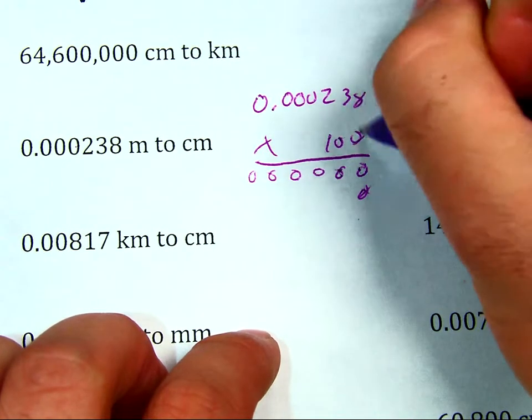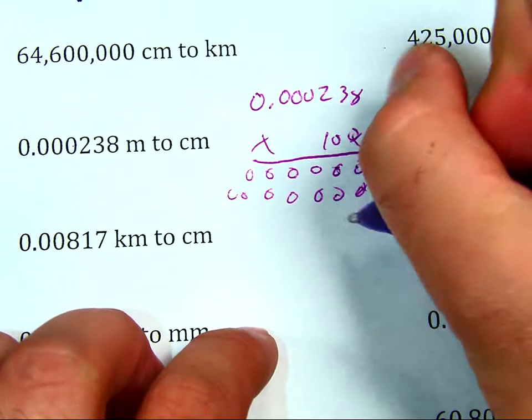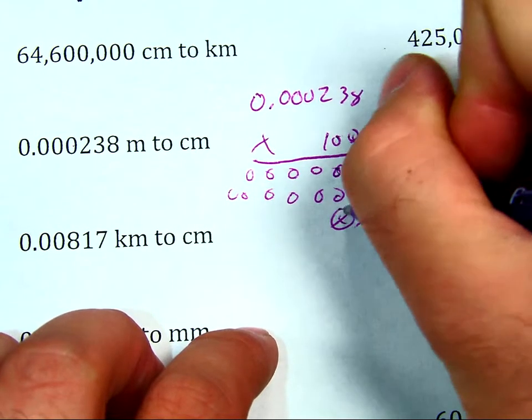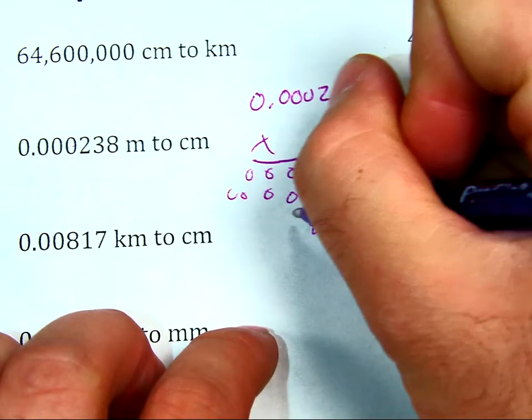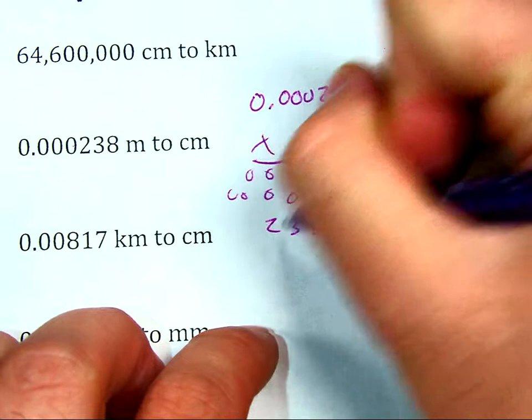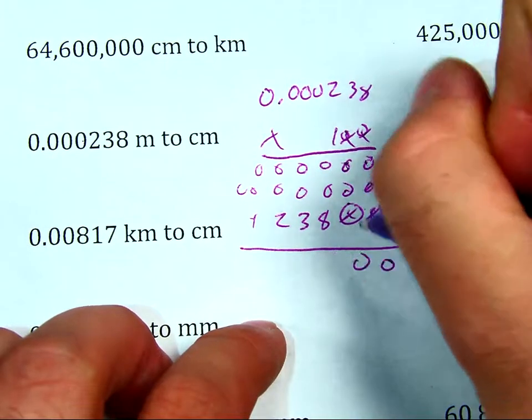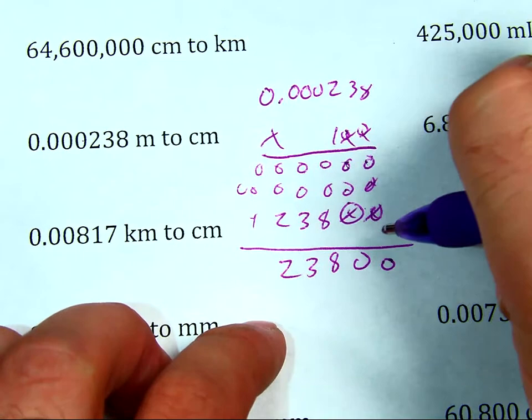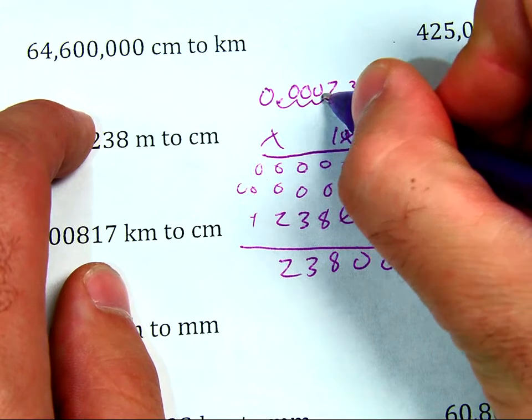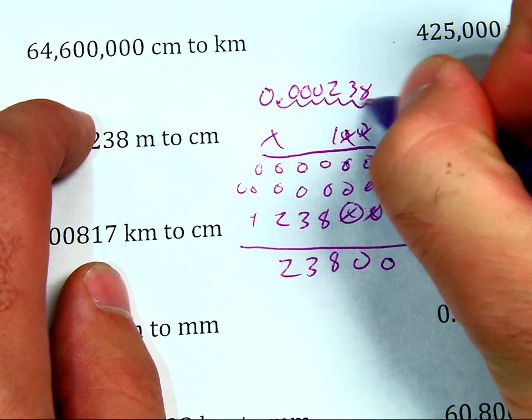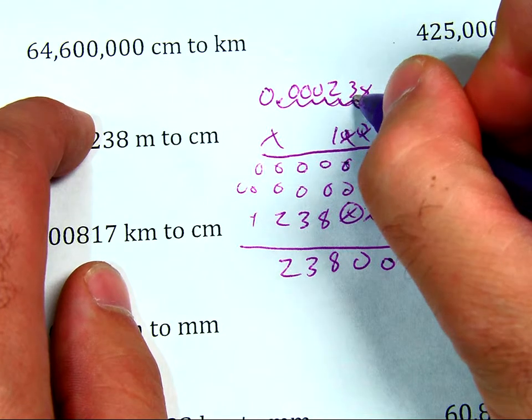So if I do 0.000238 times 100, I'll end up having a couple zeros. I'll have zeros across the board here. I'll have a placeholder. Zeros across the board here as well. Then 1, I'll have two placeholders. 1 times 8 is 8. 1 times 3 is 3. 1 times 2 is 2. The rest are going to be zeros. I can add them up. 0, 0, 8, 3, 2. Now, I have to count my decimals. I have 1, 2, 3, 4, 5, 6. Count that again to make sure I'm right. 1, 2, 3, 4, 5, 6. Good.